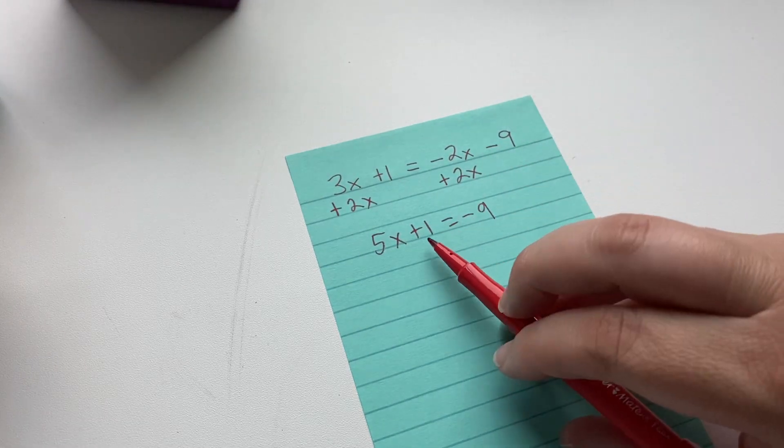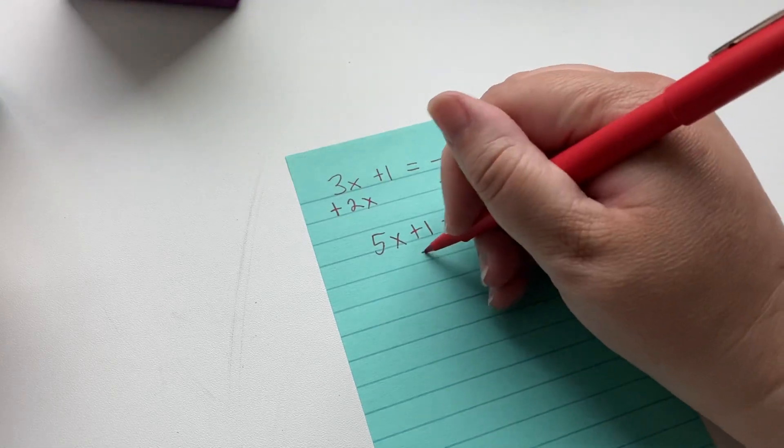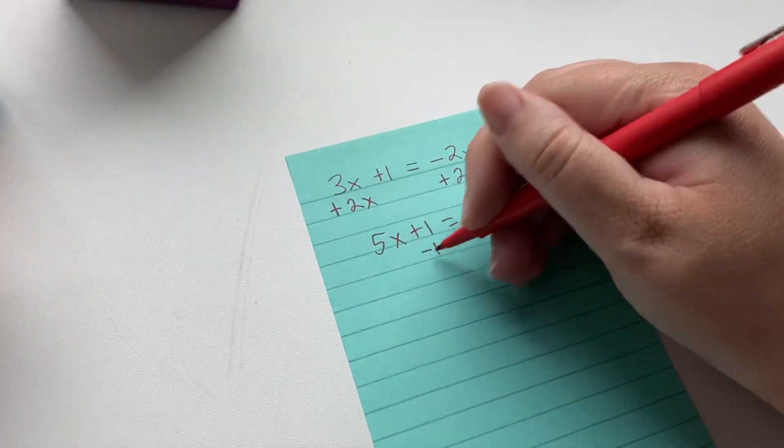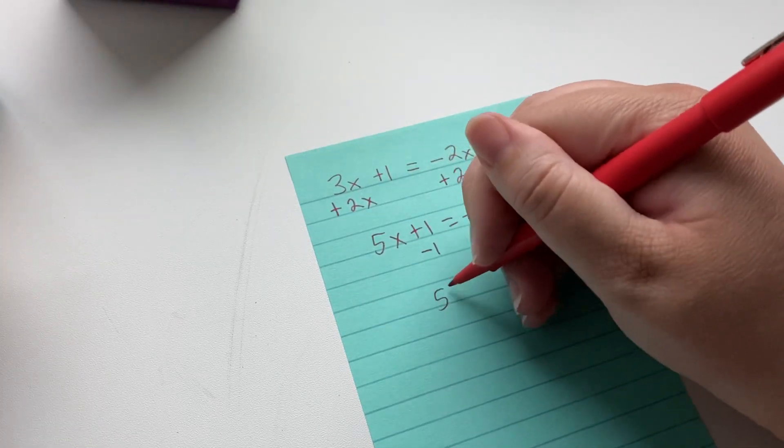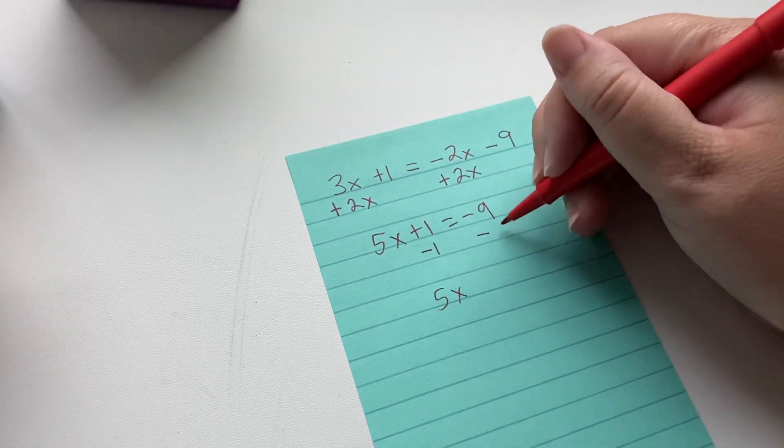Now we need to eliminate this plus 1, so we subtract 1. That becomes 0. We're left with 5x on this side, and then we have to do the same thing over here.